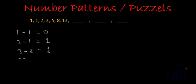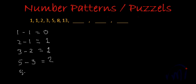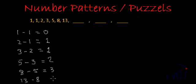Now let's find the difference between the fifth and fourth term. 5 minus 3 is equal to 2. 8 minus 5 is equal to 3. And 13 minus 8 is equal to 5.